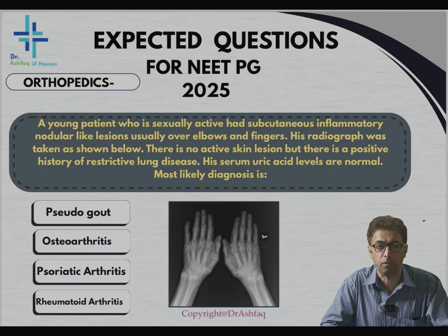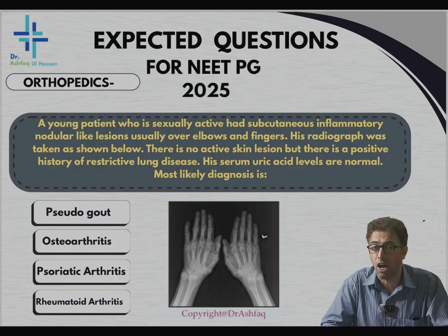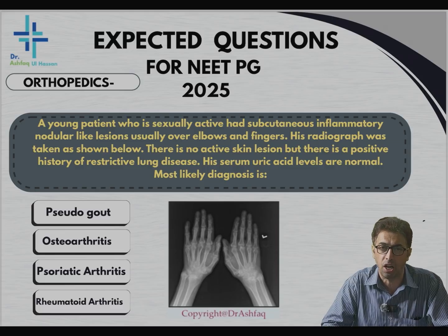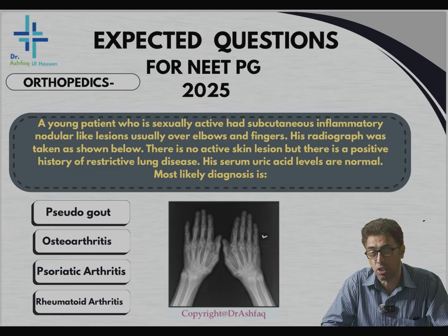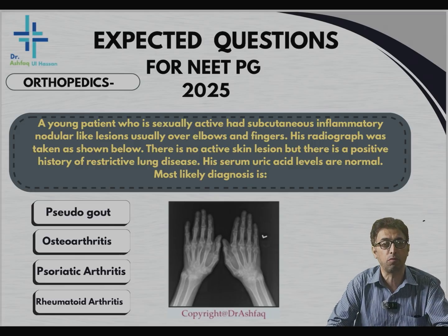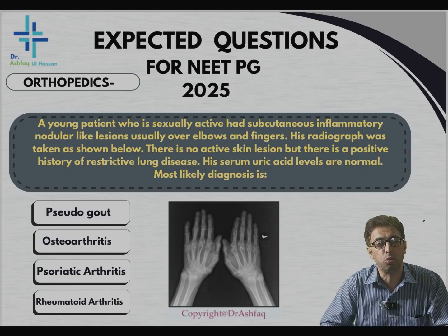Today we will be going through some important questions which you might expect in your NEET PG and FMG examinations. These questions have been asked previously and would be expected ahead as well. There is a certain axis around which questions are asked, and some tend to be from the most frequently asked topics. The first question is from orthopedics, and you have to go through these questions carefully within a limited time span.